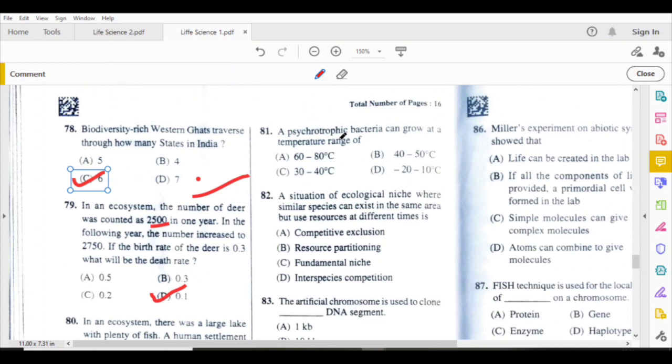A psychotrophic bacteria can grow at temperature ranging from minus 20 to minus 10. D is the answer.